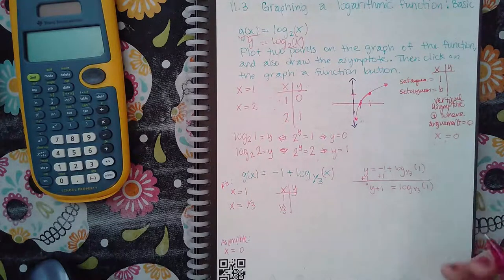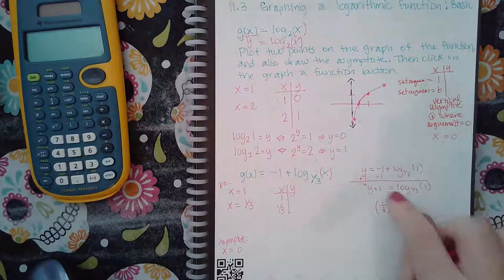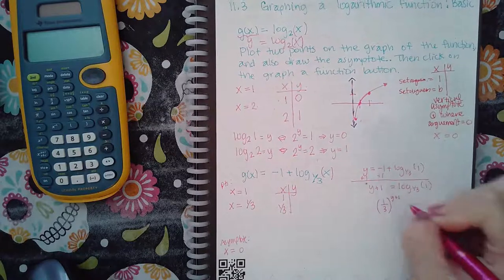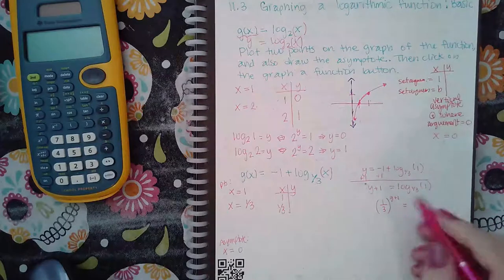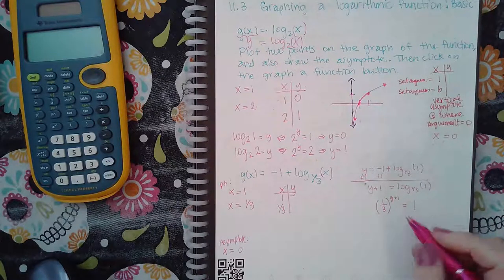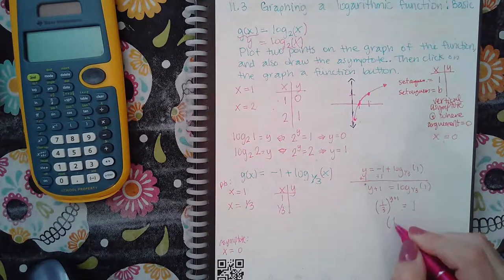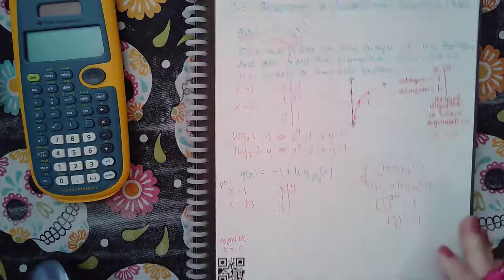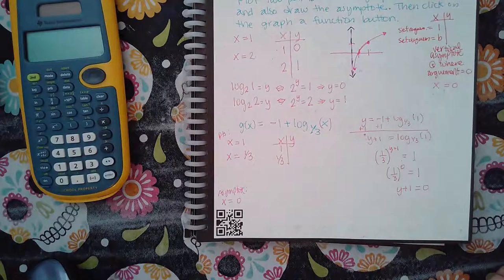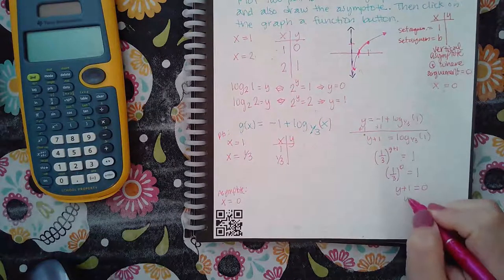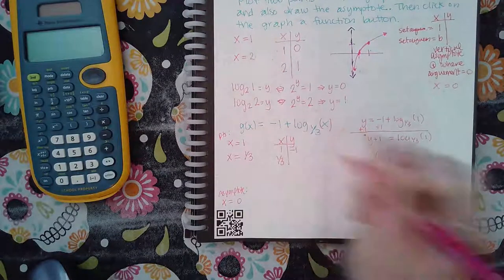Then I'm going to switch the forms over. So this base raised to the log equals the exponent. So this exponent equal to one. Now I know that the only way for me to get that is if that exponent equals zero, because any base raised to the zero power equals one. So I know that this needs to be zero. What that means is that y plus one has to equal zero. And so then if I solve for y, that means y actually has to equal negative one.